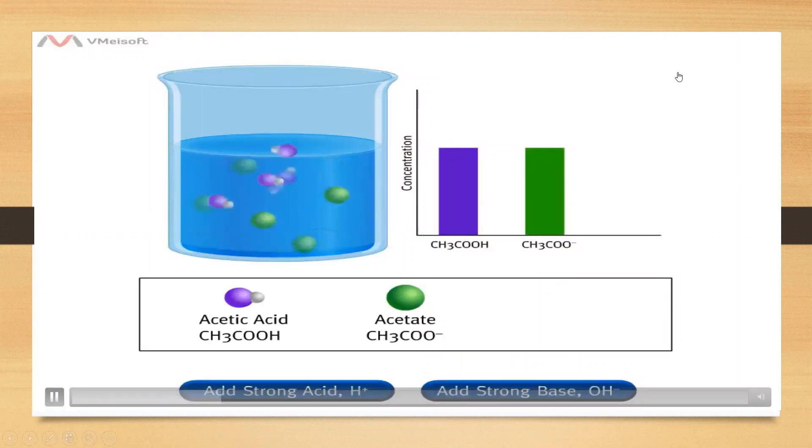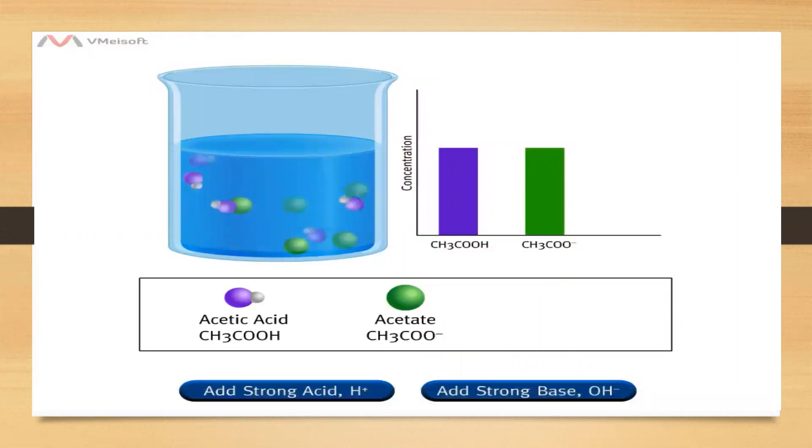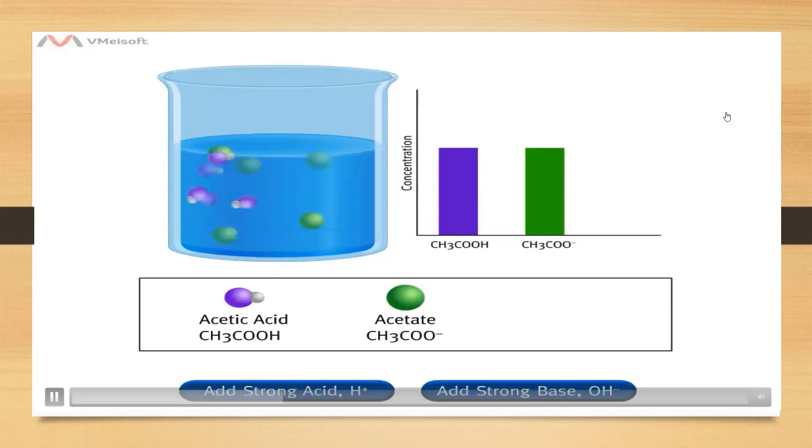A buffered solution has the ability to resist changes in pH upon the addition of small amounts of either acid or base. Choose to add a strong acid or a strong base to the buffer by clicking one of the buttons.